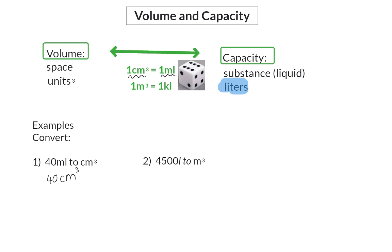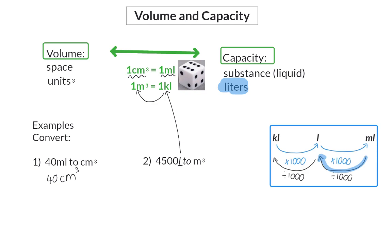Next, convert 4,500 liters to meters cubed. Here you need to first convert liters to kiloliters so that you can compare kiloliters with meters cubed. To change from liters to kiloliters, divide by a thousand. So 4,500 liters equals 4.5 kiloliters, which is the same as 4.5 meters cubed.